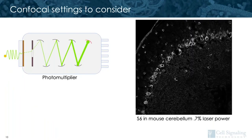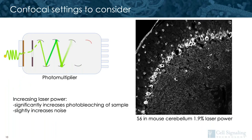On the confocal, there are a few ways to manage signal. First would be to increase laser power. By increasing the power of the laser, you're increasing the number of photons that excite your sample, as well as the number of photons that are emitted and detected by the PMT. However, the more energy your sample is exposed to, the more photobleaching of your fluorophores will occur. Furthermore, increased laser power will also slightly increase the noise in your image.